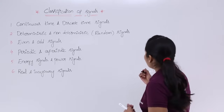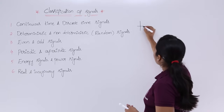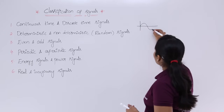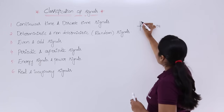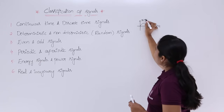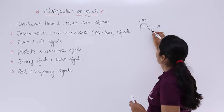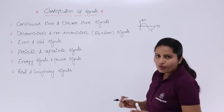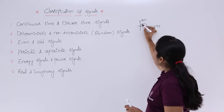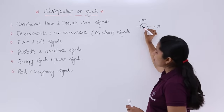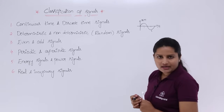For example, if you have a signal like a sine wave, this is x of t. Here this is 1 and here this is 2. If you want the signal at t = 0.1, then by taking the reference line you can determine the amplitude of that signal. So this is called a continuous time signal.